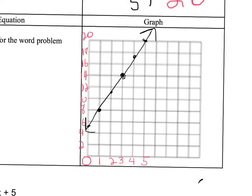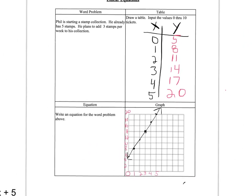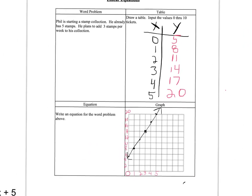If I zoom back down, now we have... we've lost our equation, so let's put it back. Y equals 3x plus 5.